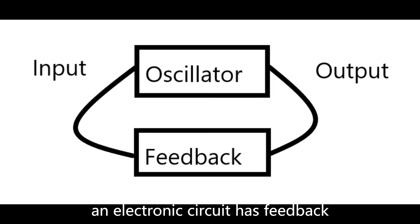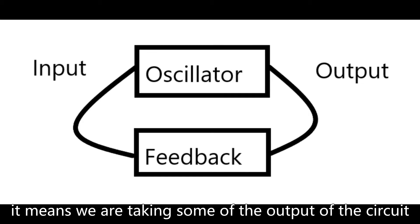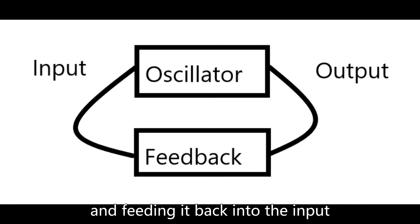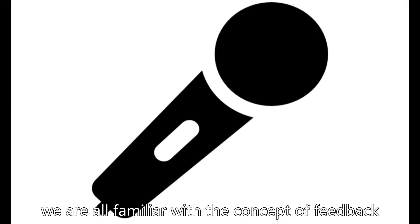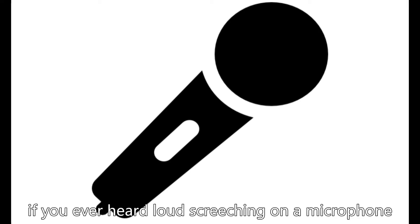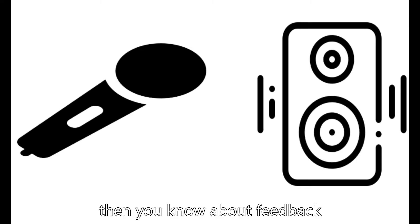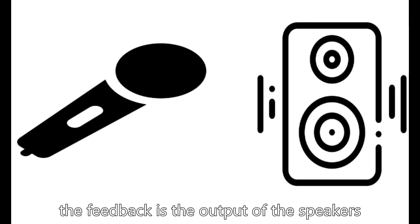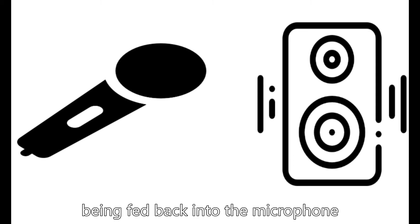When we say an electronic circuit has feedback, it means we are taking some of the output of the circuit and feeding it back into the input. We are all familiar with the concept of feedback. If you ever heard loud screeching on your microphone at a stadium, then you know about feedback. In this case, the feedback is the output of the speakers being fed back into the microphone.